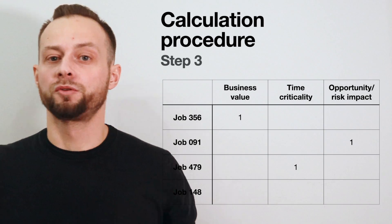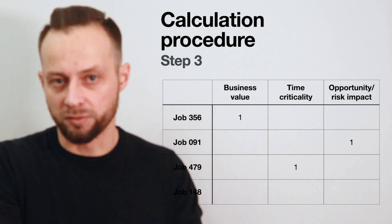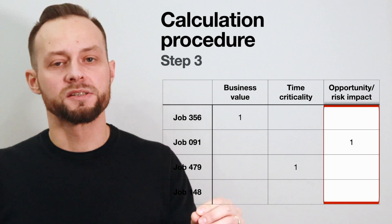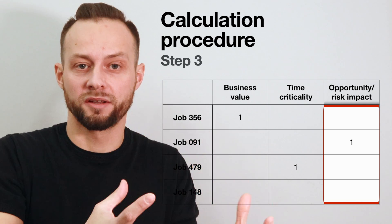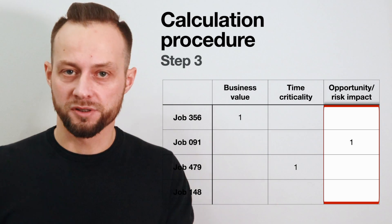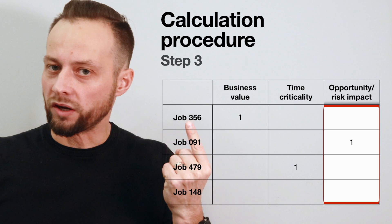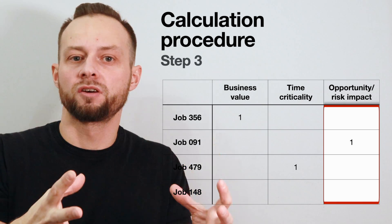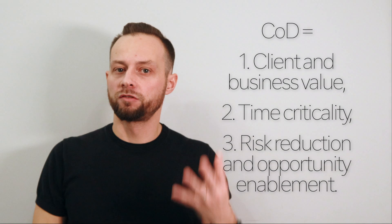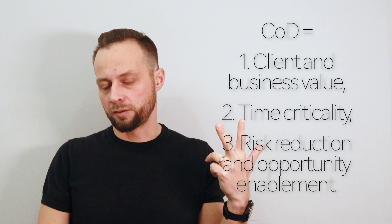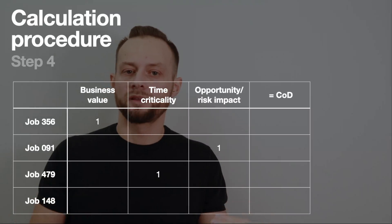Step three: go to the next column — risk reduction and opportunity enablement. Choose the job that has the least impact on risks and opportunities and set it to one. This is another smallest value within this particular column; it can be any line you choose. Then estimate other jobs relative to this one — to what extent do they have a stronger impact on risks of the entire initiative? Step four: recall that CoD is a sum of client and business value, time criticality, and effect on risk reduction and opportunity enablement — sum up the first three columns.